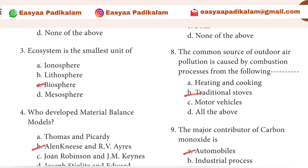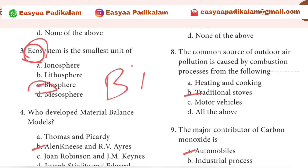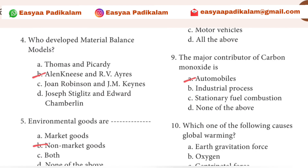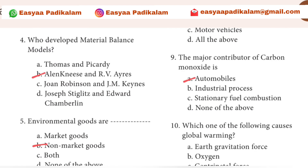Ecosystem is the smallest unit of ecology. If you have ecosystem, you have biosphere. Fourth question: